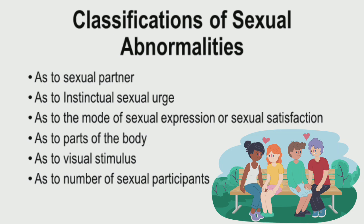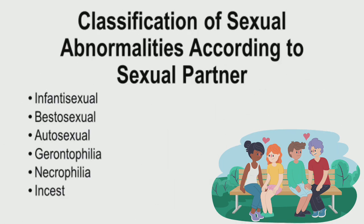We have a lot of classifications of sexual abnormalities. We will be discussing them by groups. We have classification based on sexual partner preference, based on instinctual or sexual urge, based on the mode of sexual expression or sexual satisfaction, based on the parts of the body preferred during sexual activities, based on visual stimulus, and based on the number of sexual participants in a certain sexual activity.